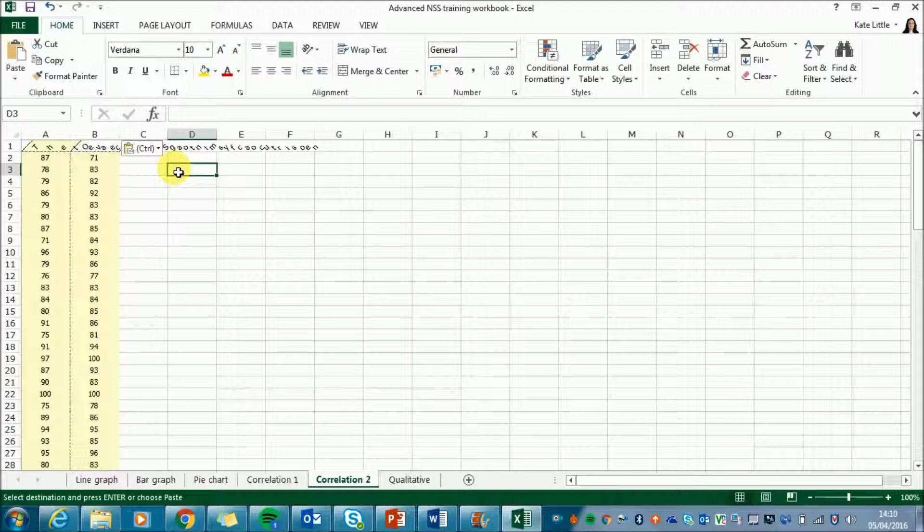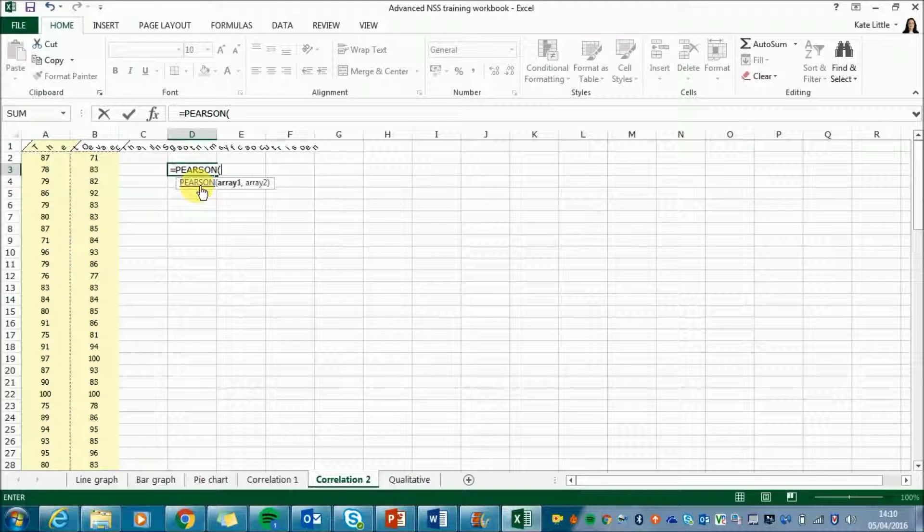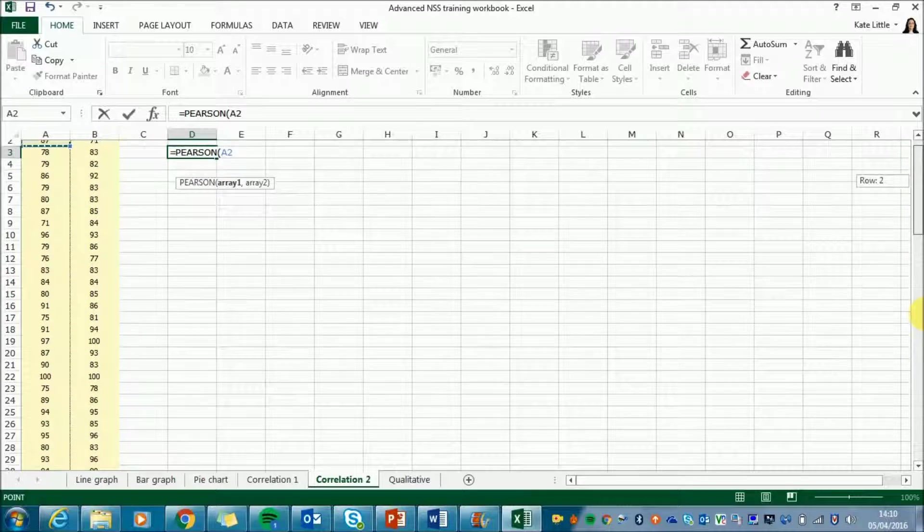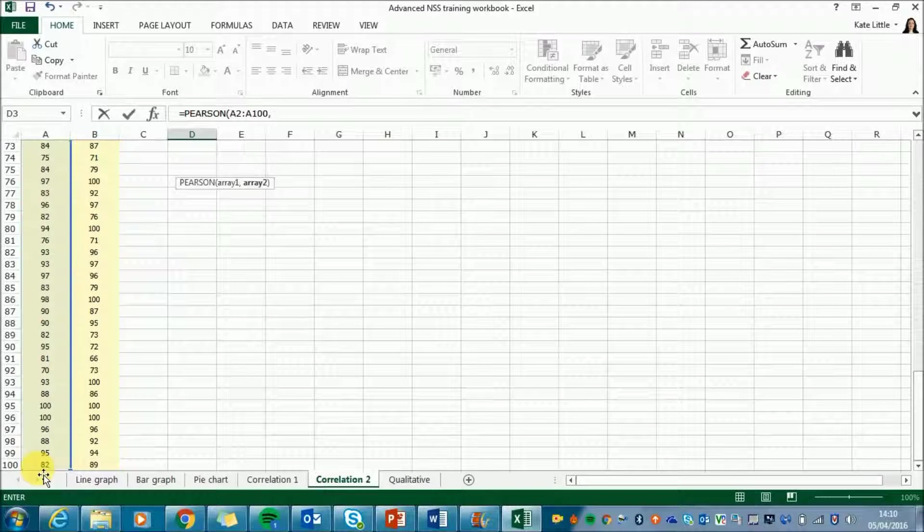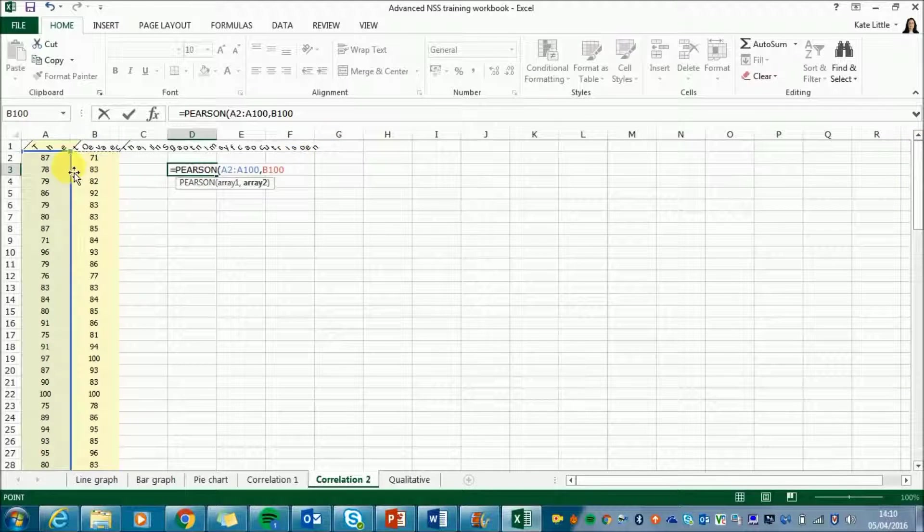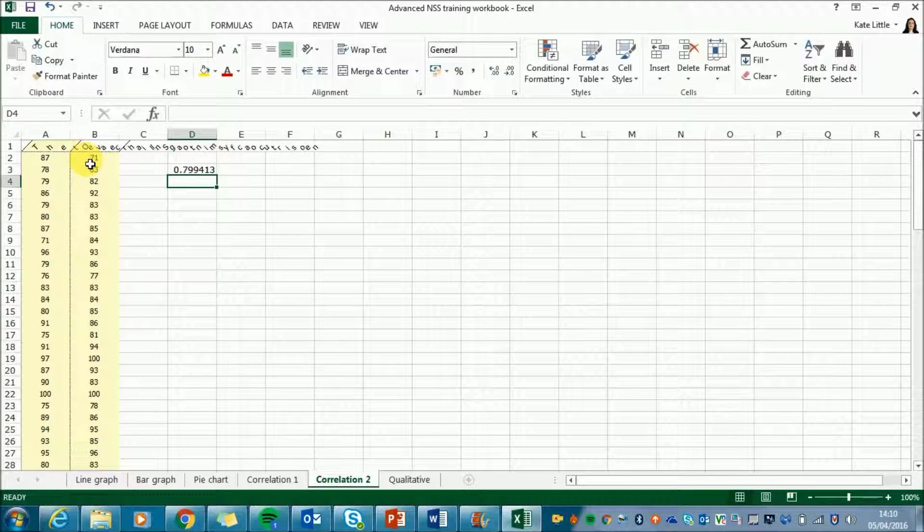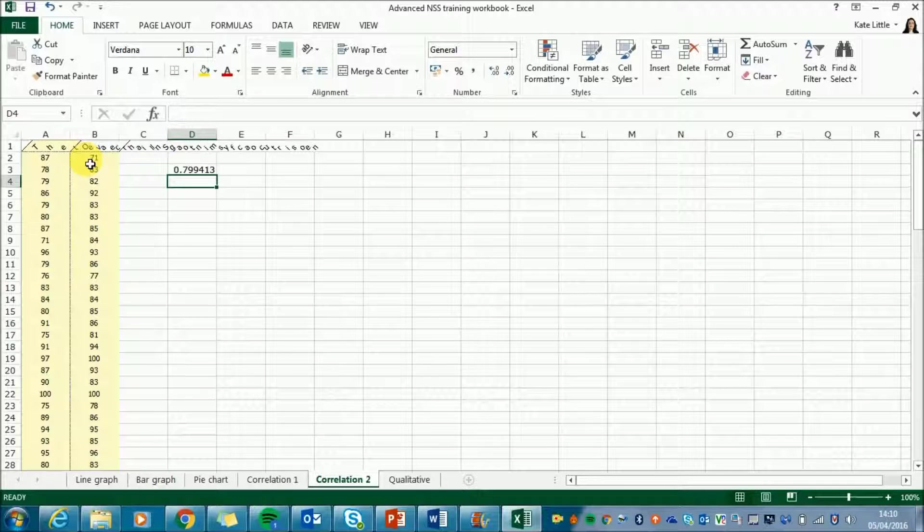So I'm going to click into the square that I want to do my Pearson's R calculation. Start with an equals and find Pearson. Here we go. And if I first of all, highlight my first column of numbers, put a comma in and then choose my second column of numbers. Make sure to close the brackets and press enter. And you've done your calculation. 0.799 is your Pearson's R correlation coefficient.